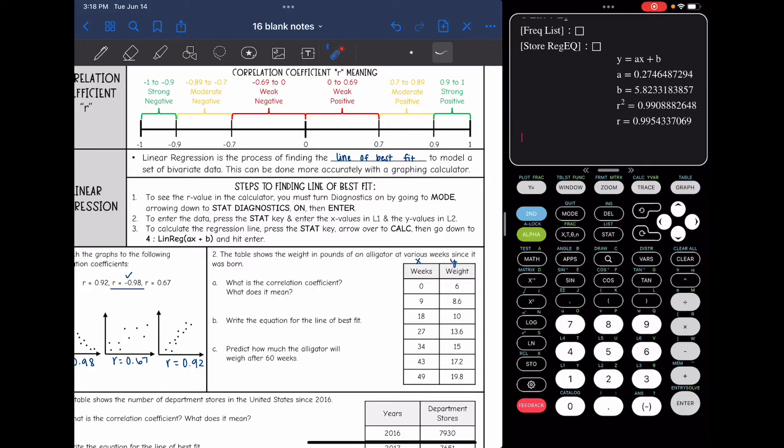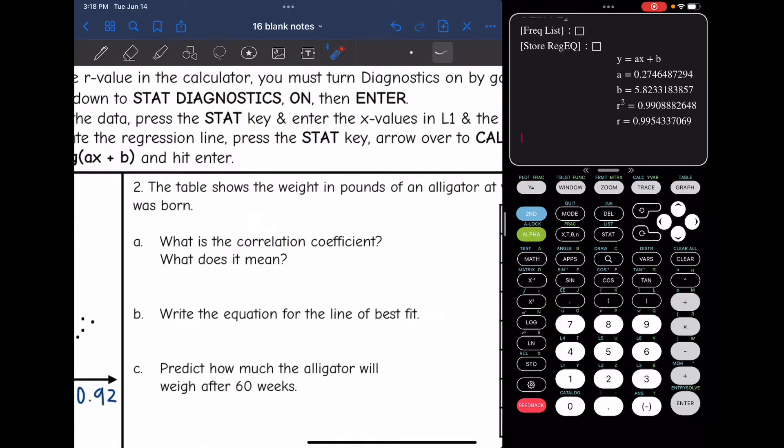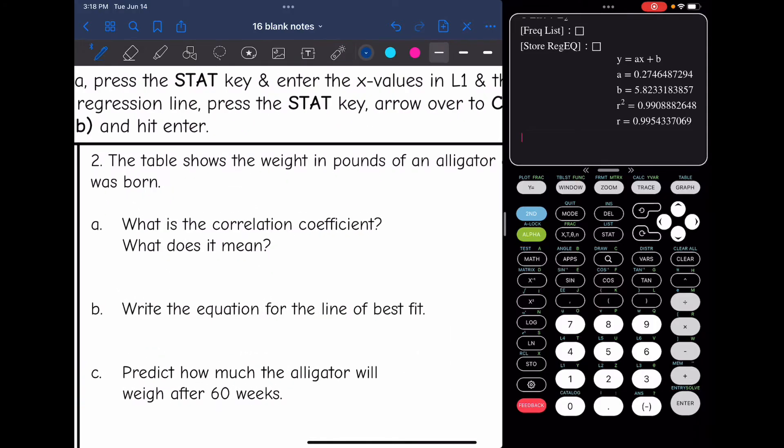On your calculator, it might say calculate. So there is the slope, the a value, since that's the coefficient of x is the slope. So it's about 0.27. The y-intercept is about 5.83. And then we're going to look at that r value. That r value is 0.995. So r equals 0.995, and that means it's a very strong and positive correlation.